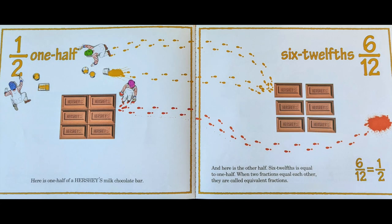One half. Here is one half of a Hershey's Milk Chocolate Bar. Six twelfths — and here is the other half. Six twelfths is equal to one half. When two fractions equal each other, they are called equivalent fractions.